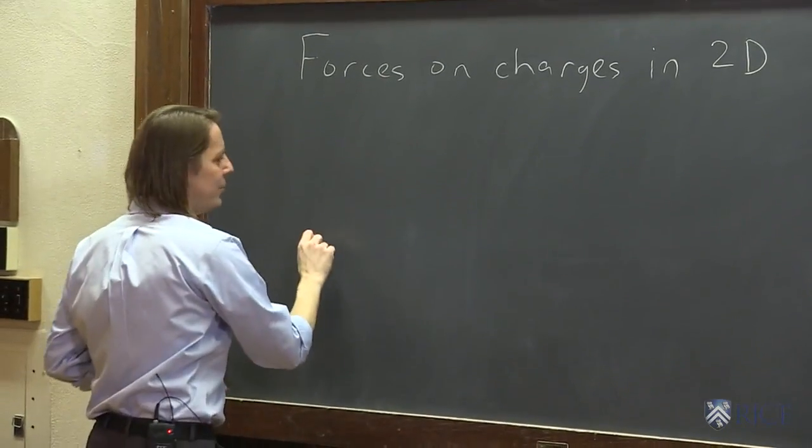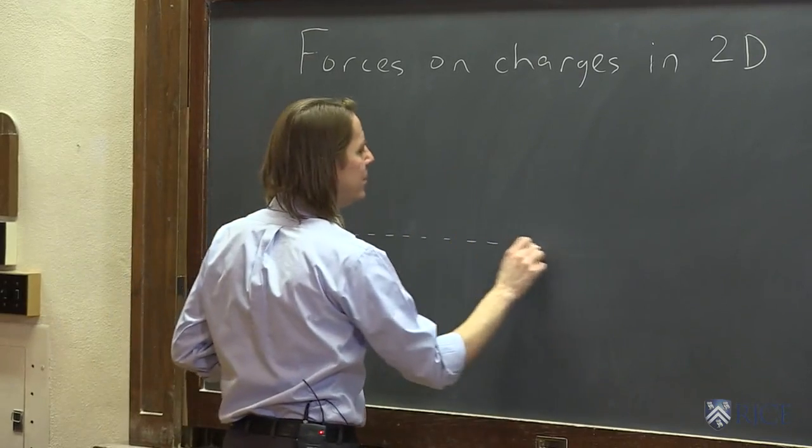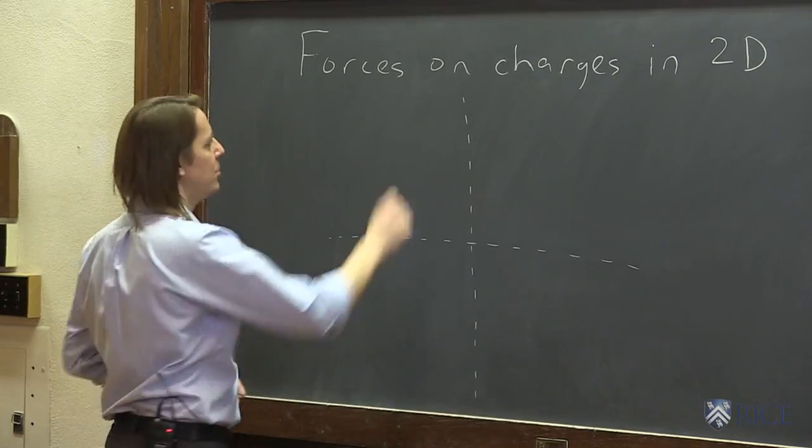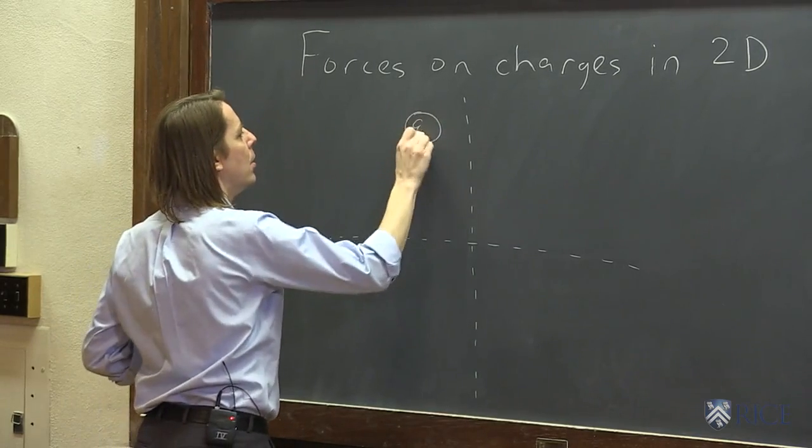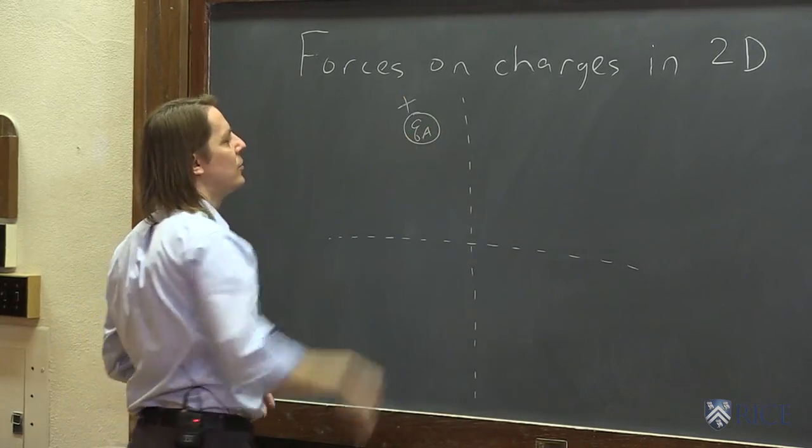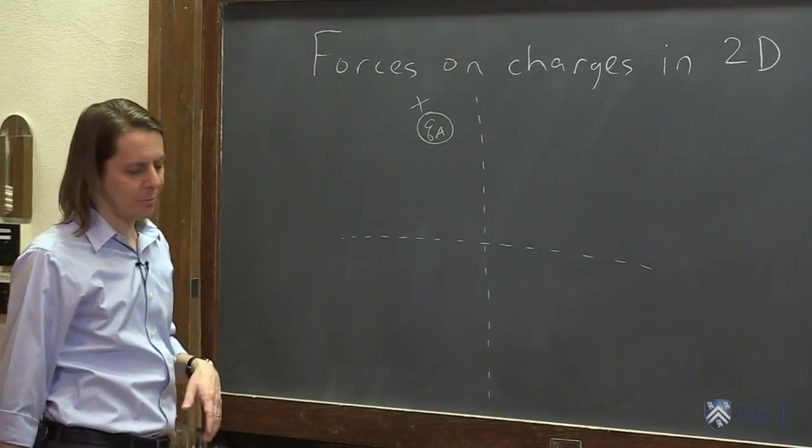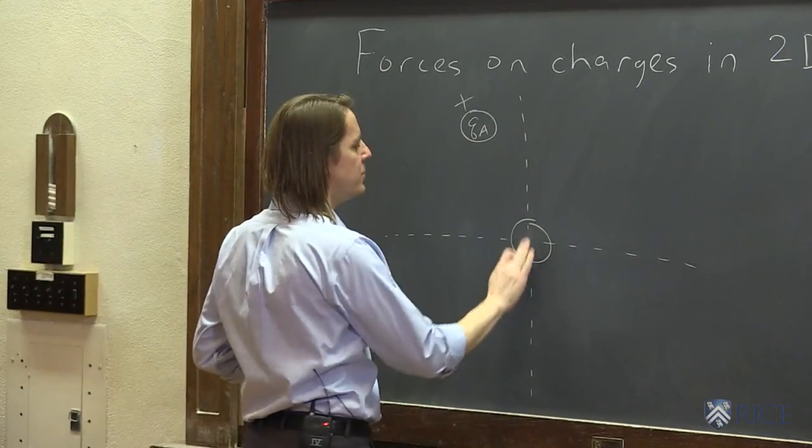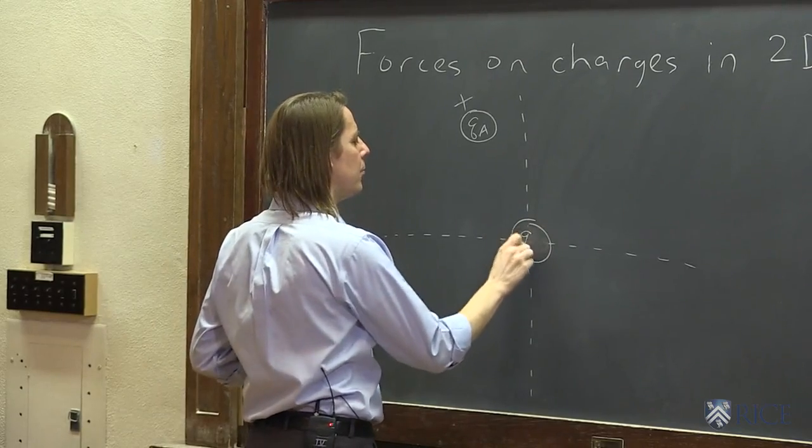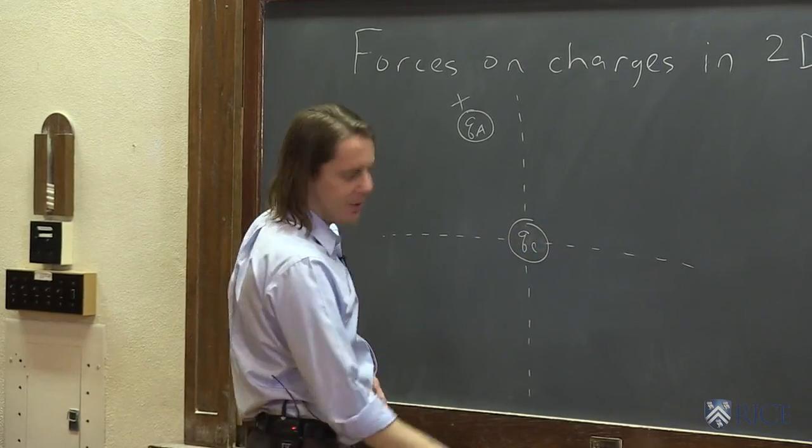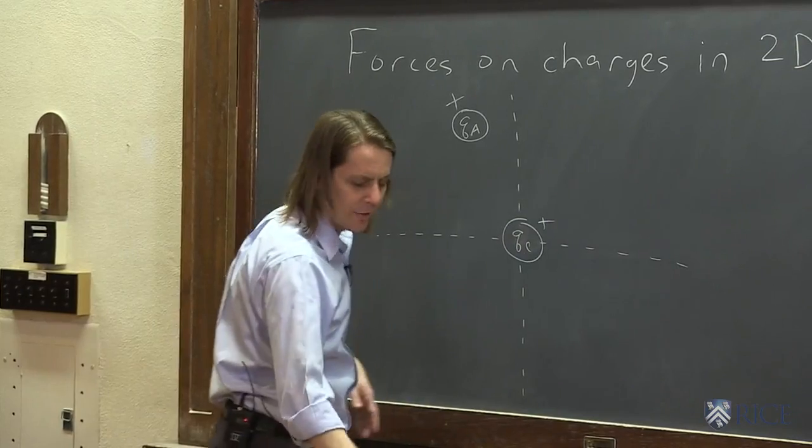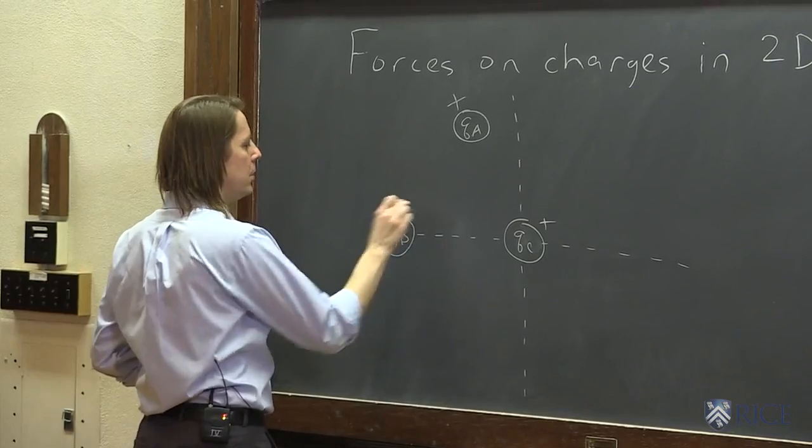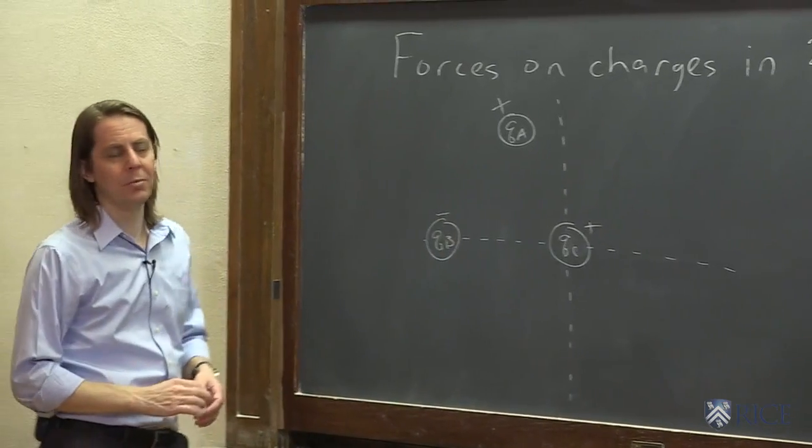So let's look here. Say we have a two-dimensional coordinate system like this, and we've got a charge up here qa - let's say it's positive. And we've got one at the origin qc, and that one I wanted to make positive also. And then over here on this axis we got qb which is negative. We'll make one of them negative.